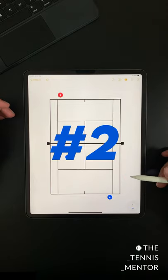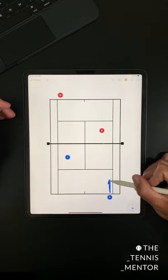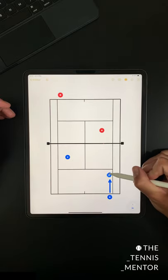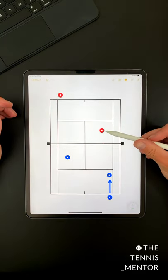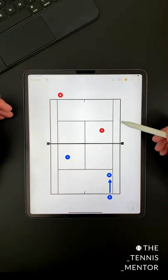The second situation is if you receive a short ball and have the opportunity to shift your position forwards. If you hit an attacking shot down the line from here, your opponent at the net is going to have much less time making for a much tougher volley.